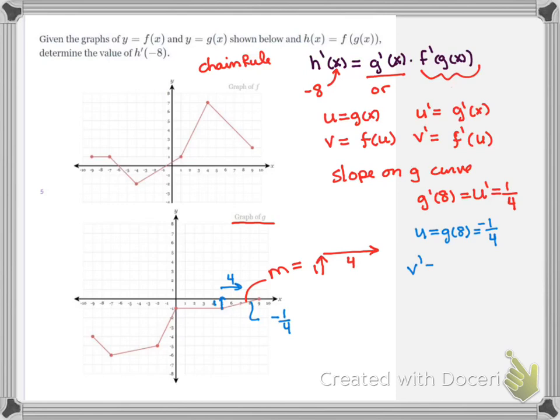So that means my v prime is equal to f prime of that inner function u. Well, g of 8 was negative 1 quarter. So now I need to find the slope at negative 1 quarter on the f curve. So here's the f curve.